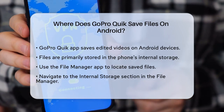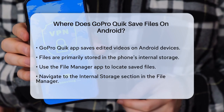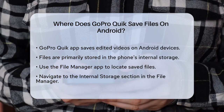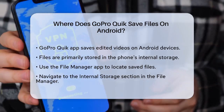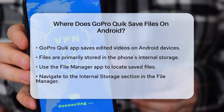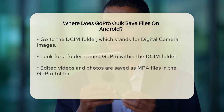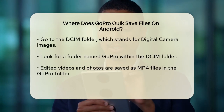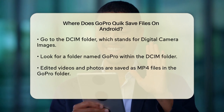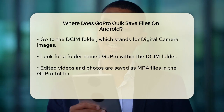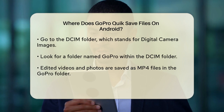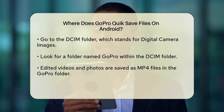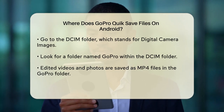The main place to look is in your phone's internal storage. Here's how you can find them. Open your file manager app on Android. If you don't have one, you can download a free one from the Play Store. Navigate to the internal storage section. Once there, go to the DCIM folder, which stands for Digital Camera Images. This is where media files are commonly saved. Inside the DCIM folder, you should find a folder named GoPro.